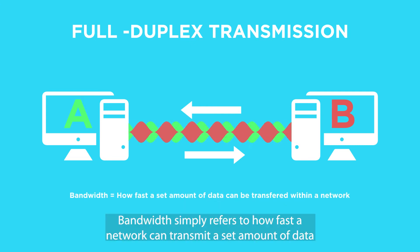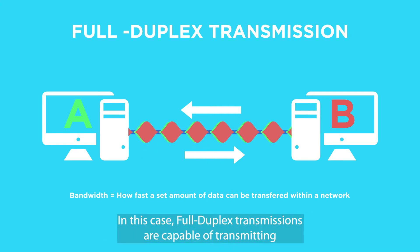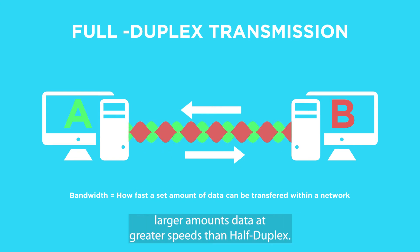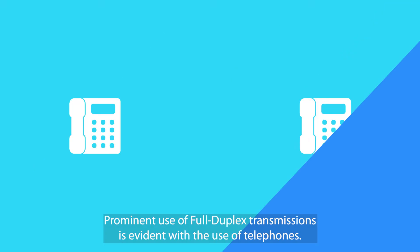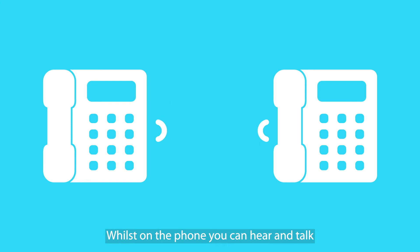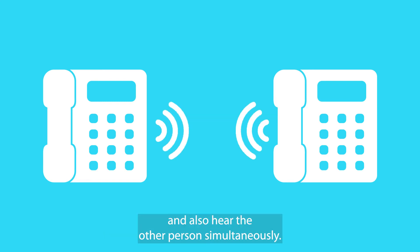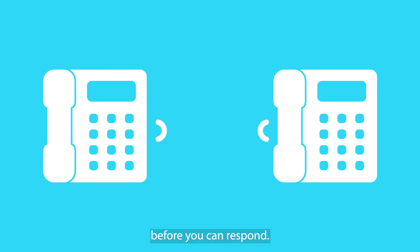Bandwidth simply refers to how fast a network can transmit a set amount of data within a network. Full duplex transmissions are capable of transmitting large amounts of data at greater speeds than half duplex. A prominent use of full duplex transmissions is evident with the use of telephones. Whilst on the phone, you can talk and also hear the other person simultaneously. You don't have to wait for either person on the phone to finish talking before you can respond.